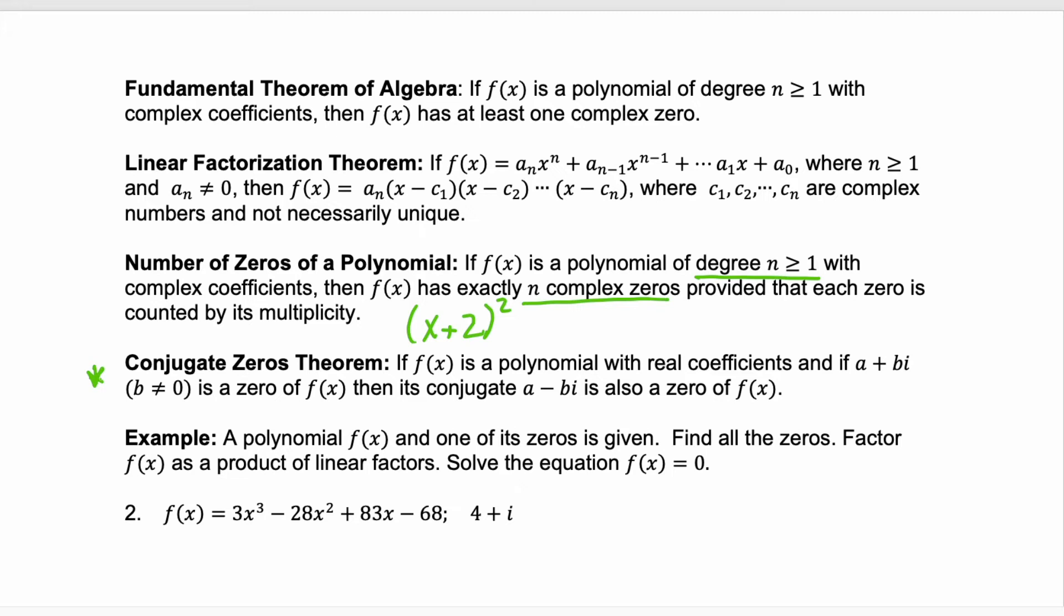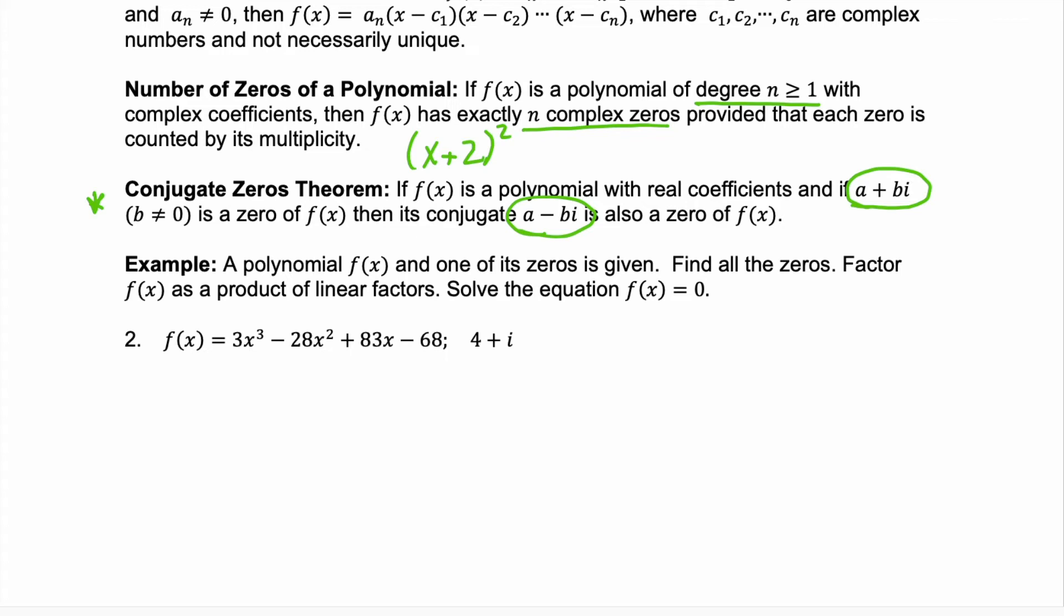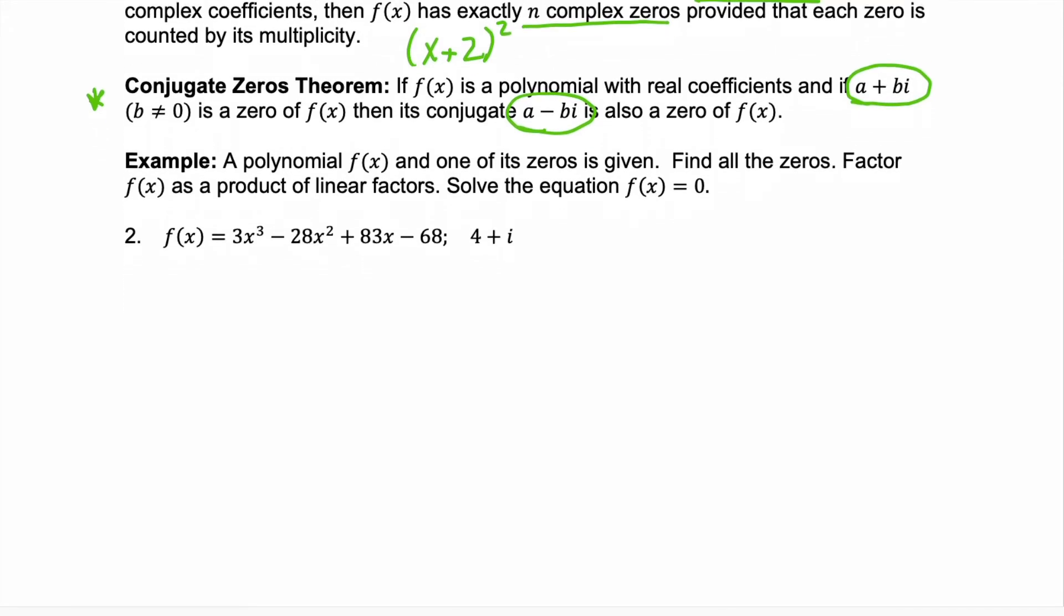What I think is probably the most helpful is this conjugate zeros theorem. If you know that you have a zero of a + bi, then the conjugate a - bi is also a zero. So if you see an imaginary number as a zero, you know that its conjugate will be your other zero. Let's look at this example where we need to find the zeros when we're given just one zero. So notice our polynomial has degree three. Because degree three, this cubed in the front, we expect three zeros. Well, we have one zero, 4 + i. This is an imaginary number. So we know that its conjugate 4 - i will also be a zero.